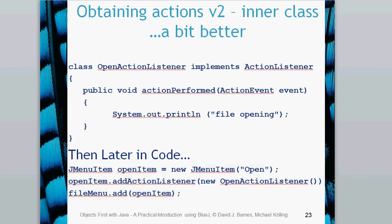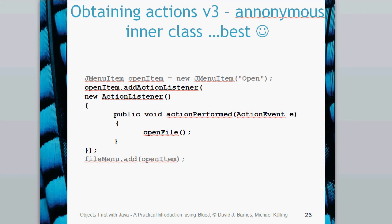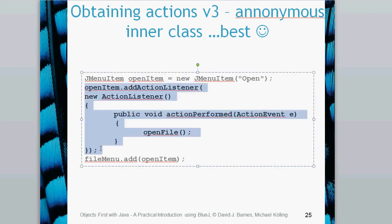The best method, shown in image viewer 0-3, is anonymous inner classes. In version two we created a new class and gave it a name, but we can use an anonymous inner class — it doesn't necessarily need a name. It needs to obey the rules of inner classes but uses special syntax, and the instance is always referred to via its super type. With anonymous inner classes, the image viewer class doesn't need to implement the action listener interface or have an action performed method at all.